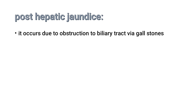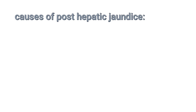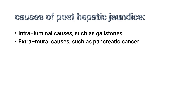Post-hepatic jaundice occurs due to obstruction of the biliary tract, such as by gallstones, resulting in increased conjugated bilirubin. The liver is functioning normally, but because the biliary tract is obstructed, bile cannot pass to the duodenum. Instead, the conjugated bile produced by the liver is excreted into the bloodstream, causing elevated conjugated bilirubin — known as conjugated hyperbilirubinemia. Causes include intraluminal causes such as gallstones, and extramural causes such as pancreatic cancer.